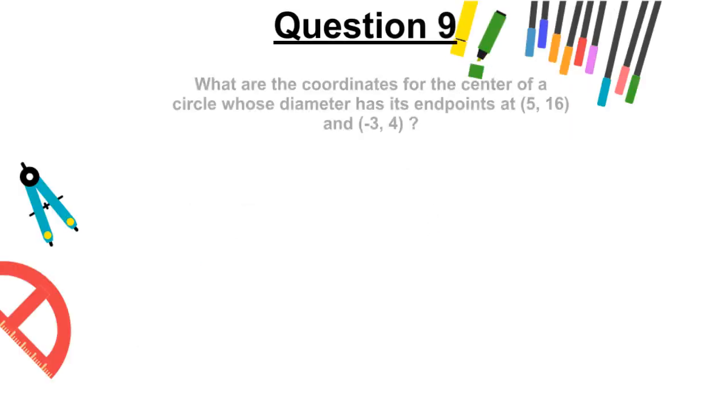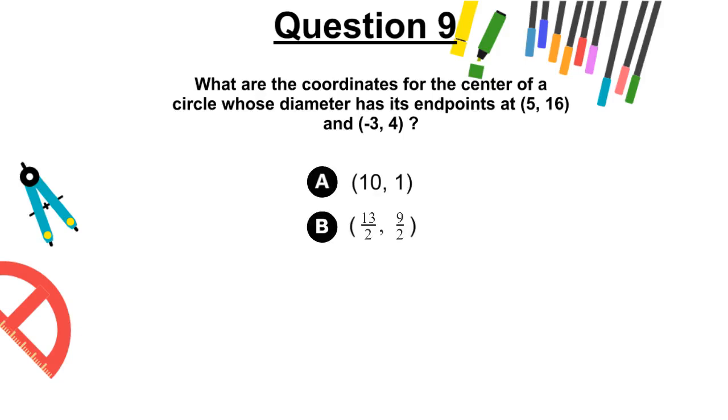Question 9. What are the coordinates for the center of a circle whose diameter has its endpoints at (5, 16) and (-3, 4)? A, (10, 1), B, (13/2, 9/2), C, (4, 6), or D, (1, 10).